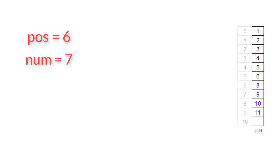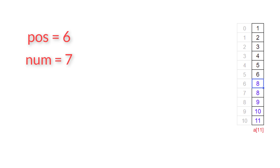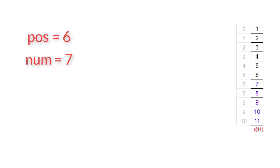It's actually a right shift by one position. At the end of this shifting operation, we move the new number to position 6, and the resultant array will look as shown on your screen.